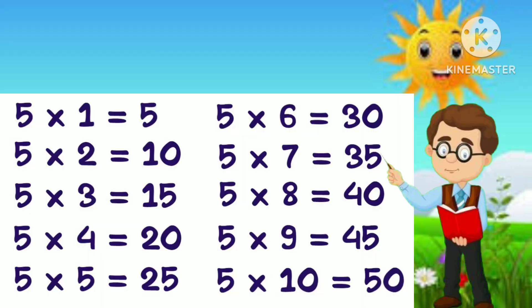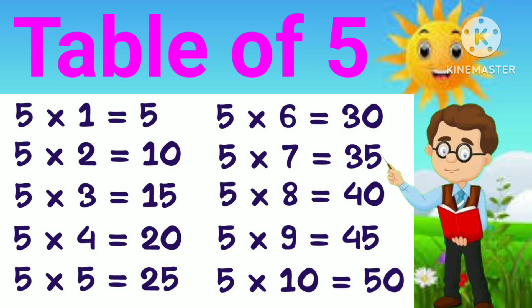Now we will repeat the Table of 5. 5 ones are 5. 5 2's are 10. 5 3's are 15. 5 4's are 20. 5 5's are 25.